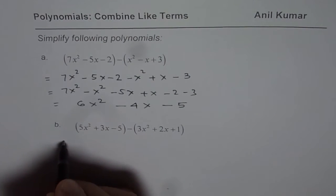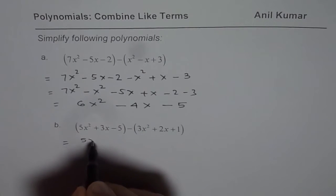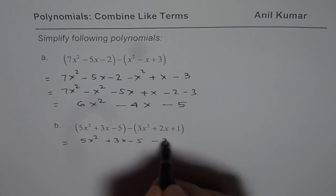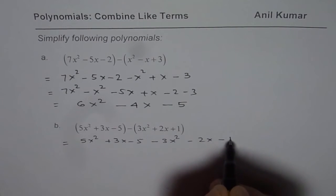Here is the solution for you. So we open the brackets. 5x squared plus 3x minus 5. This is minus. All signs will change. Minus 3x squared minus 2x minus 1.